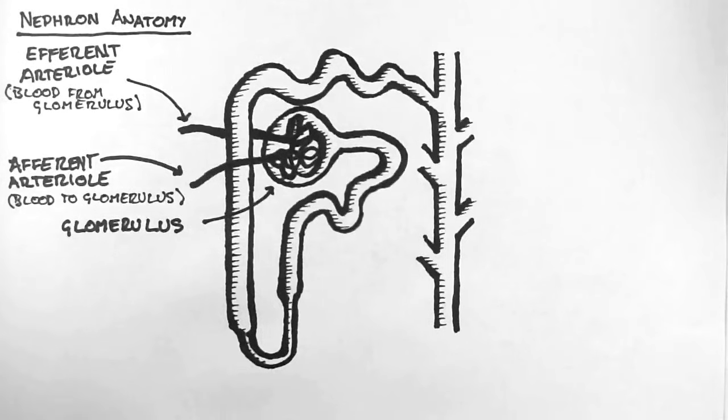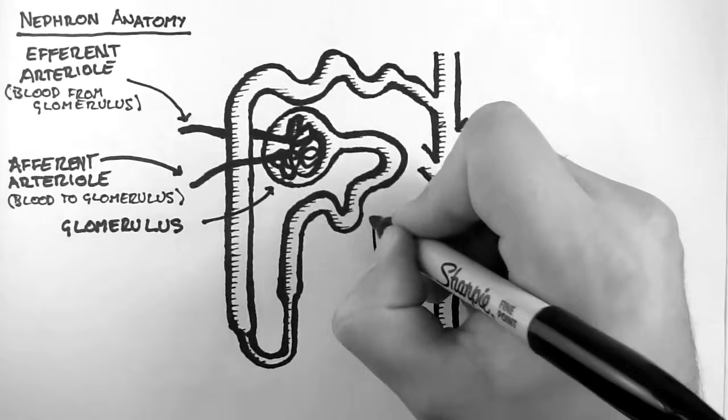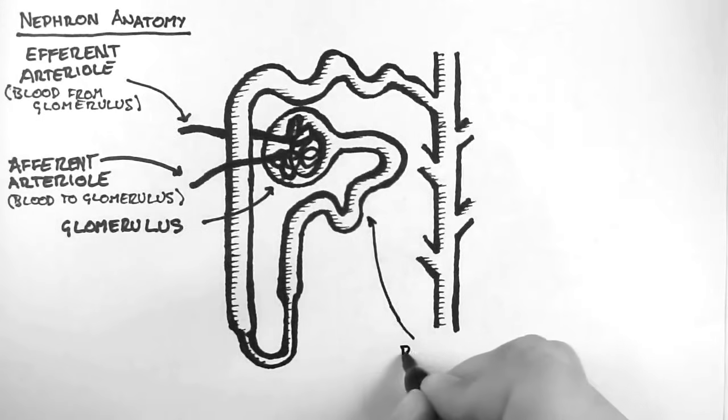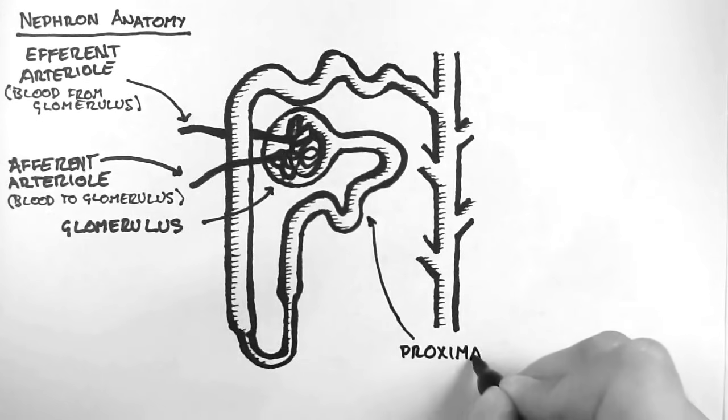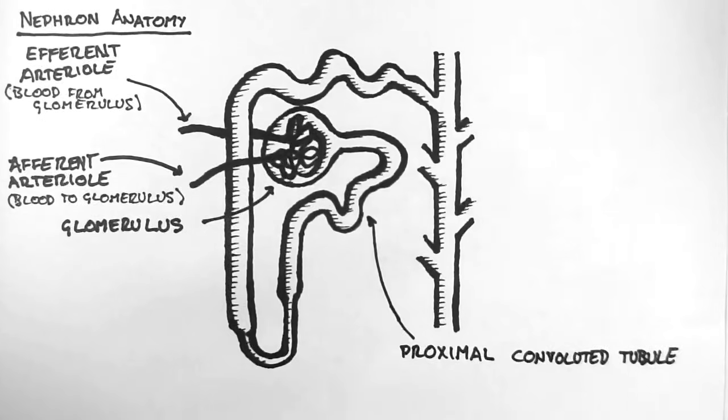Now, the filtrate, which will eventually become urine, needs things taken out of it, and also needs things put into it. To do this, it travels along this series of tubes. The first part is the proximal convoluted tubule, which is often referred to as just the proximal tubule.